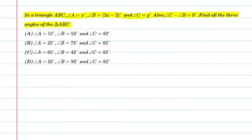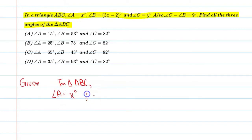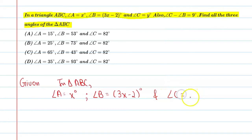So students, basically this question gives us triangle ABC where angle A is equal to x degree, angle B is equal to 3x minus 2 degree, angle C is equal to y degree. And the second condition given is that angle C minus angle B is equal to 9 degree. Let's write the given conditions.